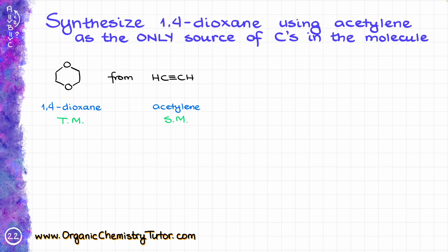Since we need to use acetylene as the only source of carbons in our molecule, that means everything we are going to use to build our cycle has got to come from acetylene. I'll have to keep that in mind when planning my synthesis. Looking at my target molecule, the functional group within the cycle is going to be an ether.